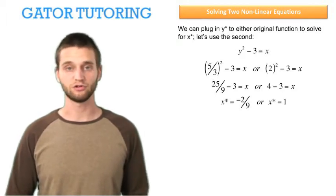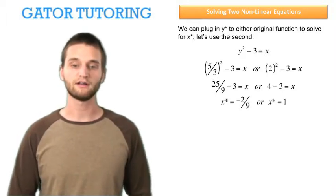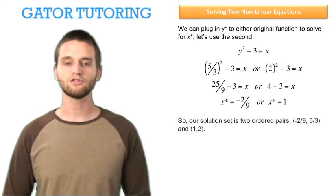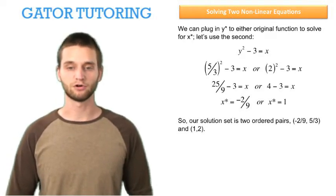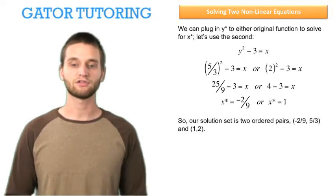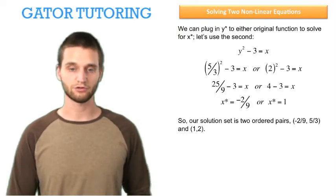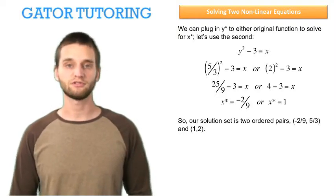We find two solutions for x star: negative 2 ninths and 1. So our solution set is two ordered pairs. Negative 2 ninths comma negative 5 thirds is the first ordered pair, and 1 comma 2 is the second ordered pair.